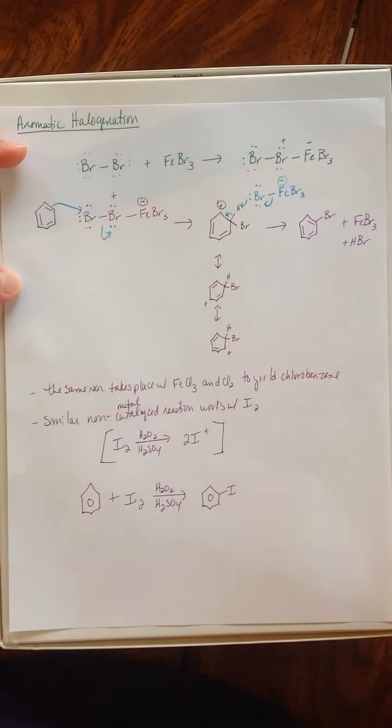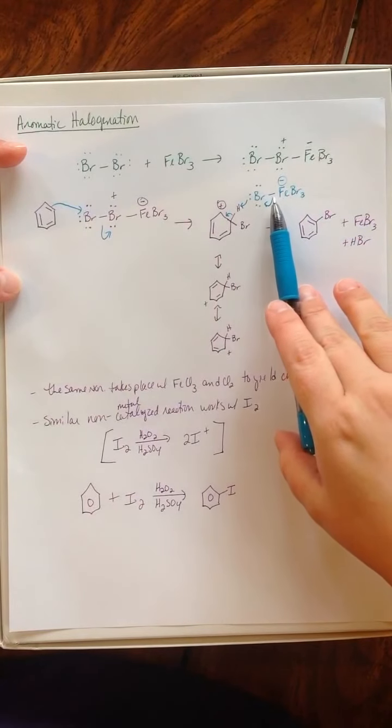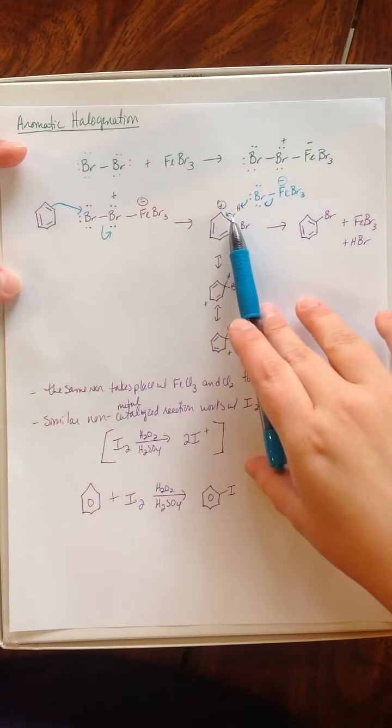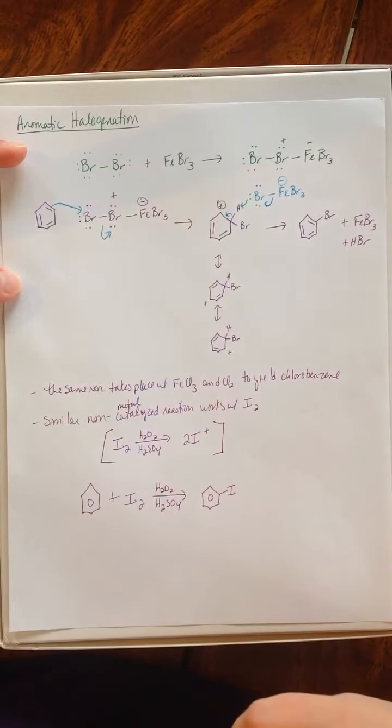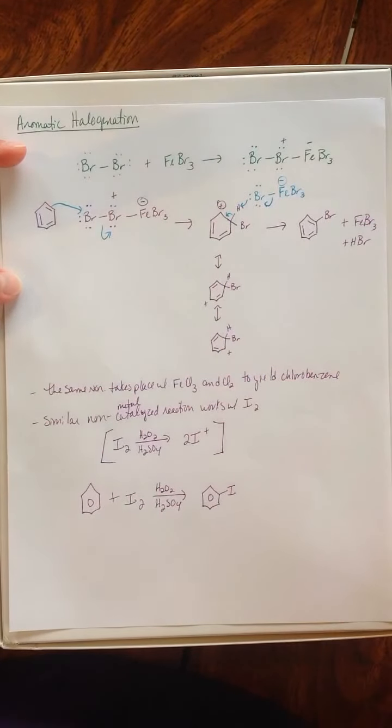So that positive charge, I went ahead and drew it in the mechanism here, is stabilized through resonance. And then this bromine can leave and pick up that hydrogen at the same time, allowing the electrons to come back to that benzene. And bam, you have bromobenzene.